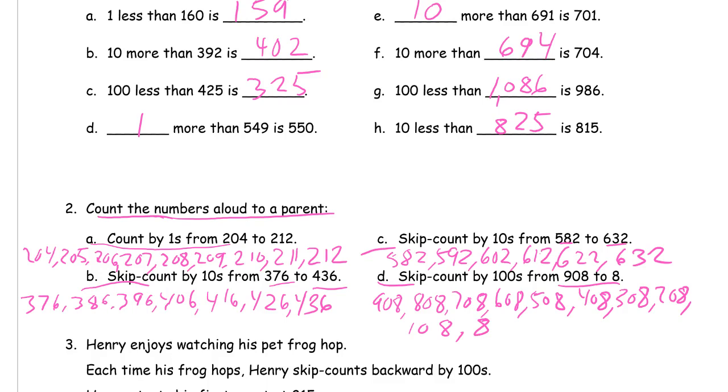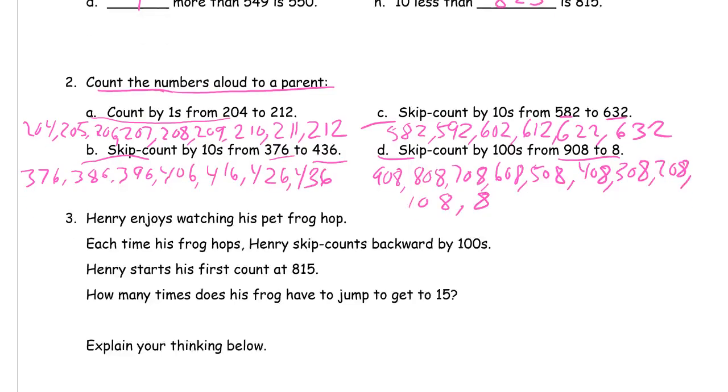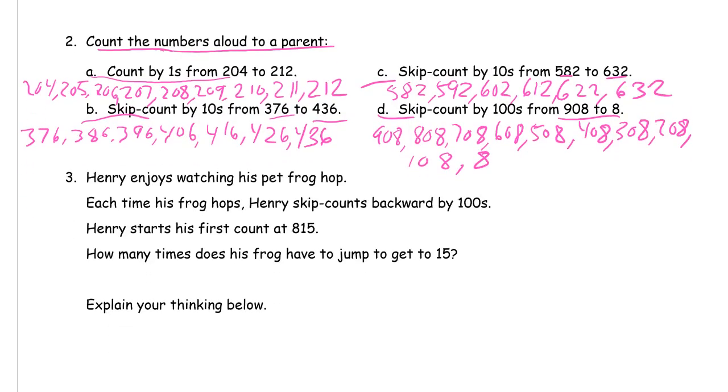Don't say these '9-0-8, 8-0-8.' Say the hundred, say the name properly. We're not just reading the digits, we're reading the number. So it's not 'nine zero eight,' it's 'nine hundred eight.' It's not 'eight zero eight,' it's 'eight hundred eight.'